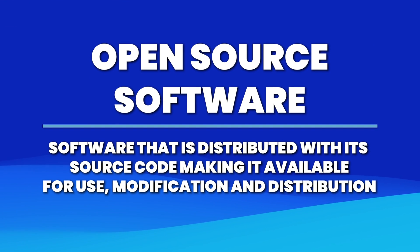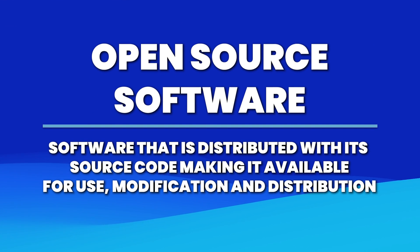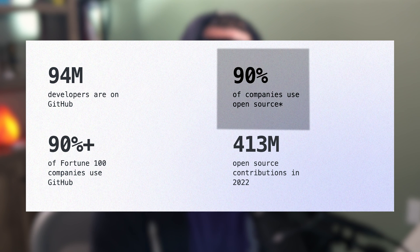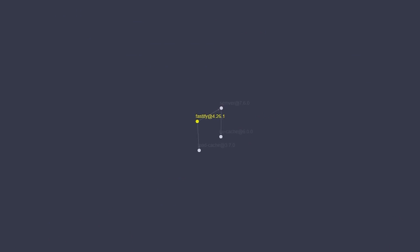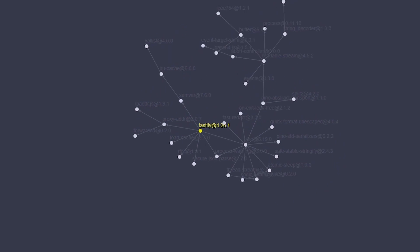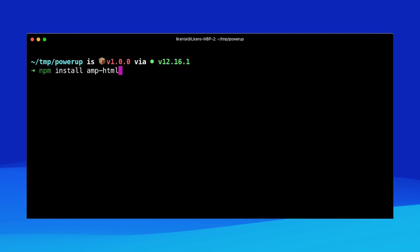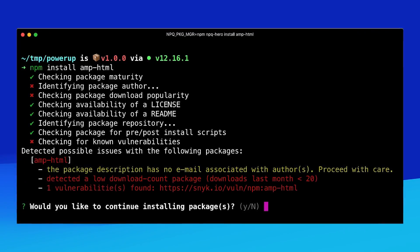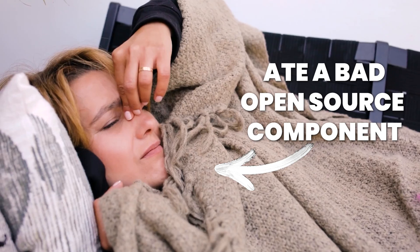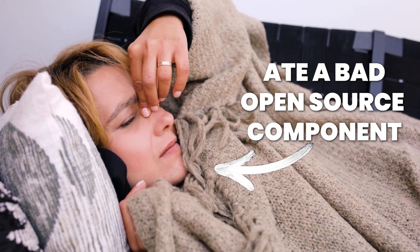Open source software has become the building block of modern applications. Statistics show that nearly 90% of all applications contain open source components. It's like a buffet of tools developers can grab to build incredible things quickly and efficiently. But just like any buffet, if you're not careful, you might take something you don't like — or worse, take something that'll make you feel ill later.